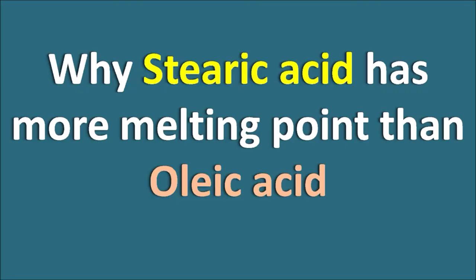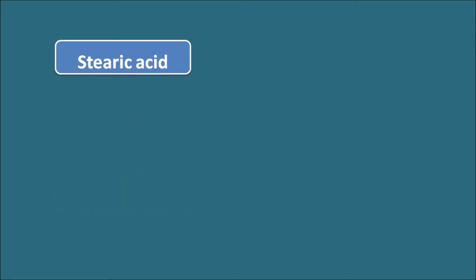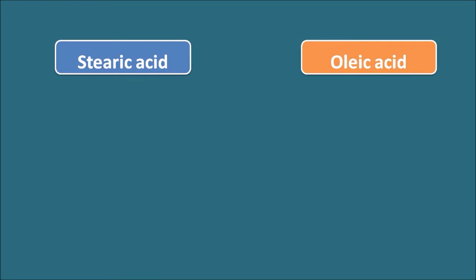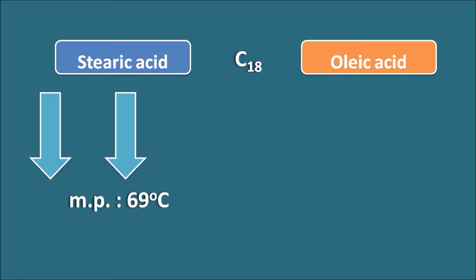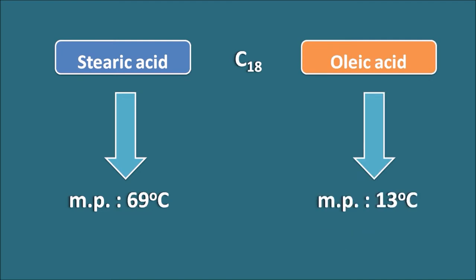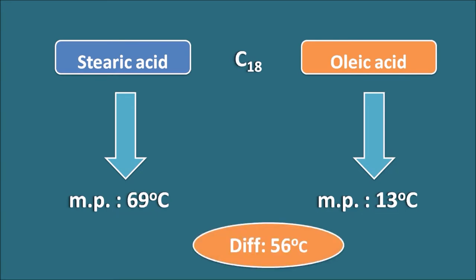Why does stearic acid have a higher melting point than oleic acid? Both stearic acid and oleic acid are C18 fatty acids, but stearic acid has a melting point of 69 degrees centigrade whereas oleic acid has a melting point of 13 degrees centigrade — a difference of 56 degrees centigrade, even though both have the same chain length.